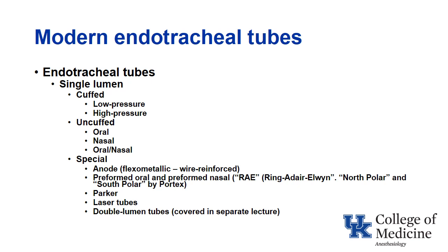There are special endotracheal tubes: anode tubes, also known as flexometallic, wire reinforced, or armored tubes. There are preformed oral and preformed nasal tubes. The original tube invented by Drs. Ring, Adair, and Elwyn was called the RAE tube. Since this is a trademark, other companies when describing preformed tubes may use the terms north polar or south polar for nasal or oral preformed tubes. There are also Parker tubes, laser tubes, and double lumen tubes.